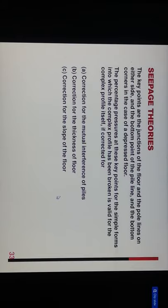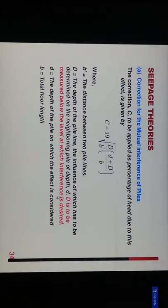Corrections are: first, correction for mutual interference of piles; second, correction for thickness of floor; and third, correction for slope of floor. The correction for mutual interference of piles applies the percentage of head due to the effect, given by C equals nineteen root of d divided by b, times capital D plus small d upon capital B. B is the distance between two pile lines. Capital D is the depth of pile line whose influence has to be determined on the neighboring pile of depth small d, measured below the level where interference is desired.